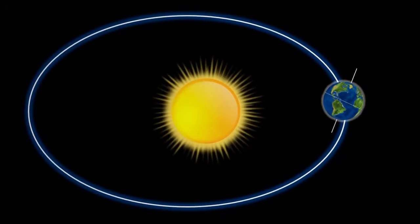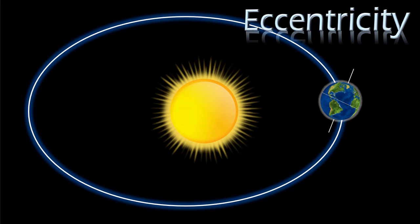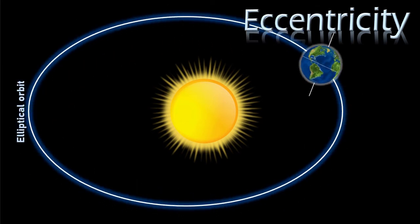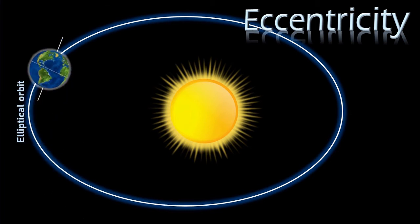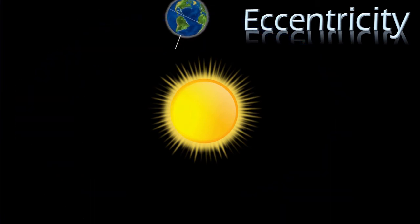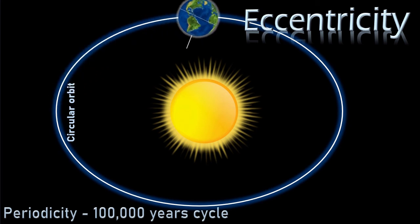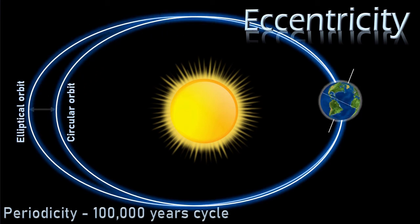First is eccentricity. In simple terms, eccentricity is the shape of the Earth's orbit around the Sun. As seen earlier, Earth's orbit is mostly elliptical. But over a cycle of 100,000 years, it was observed that the orbit has fluctuated from elliptical to circular.